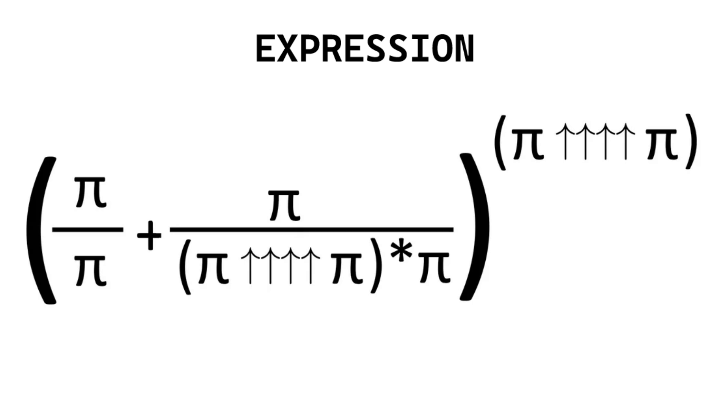This is pi over pi plus pi over pi hexade to the pi times pi to the power of pi hexade to the pi. It is a really great approximation of E.